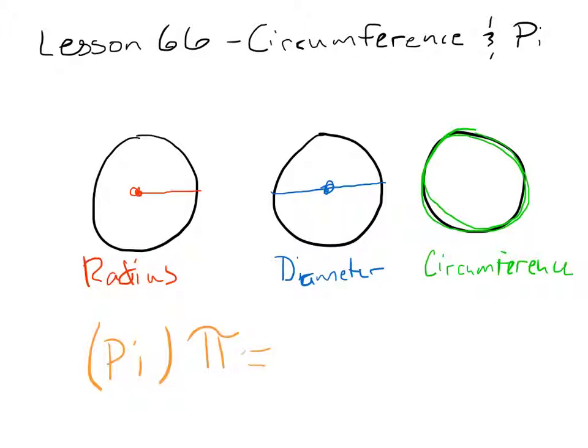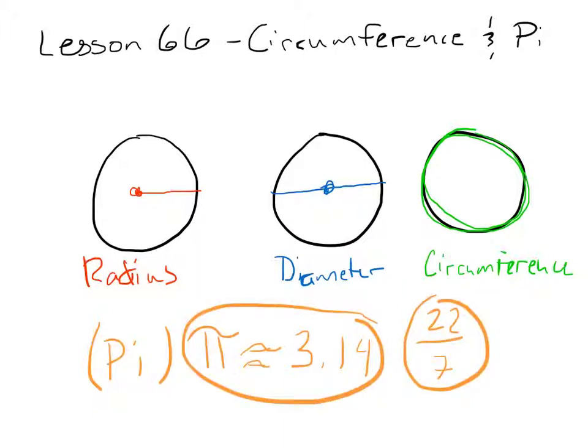And a numerical representative is approximately 3.14, and we'll also be learning the fraction 22 over 7. So those are two different ways to represent pi. Those are the main terms that we want to learn for this lesson.